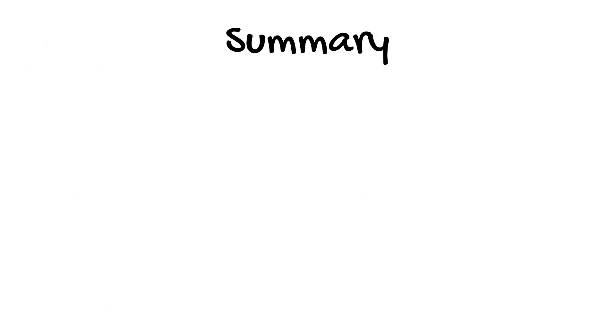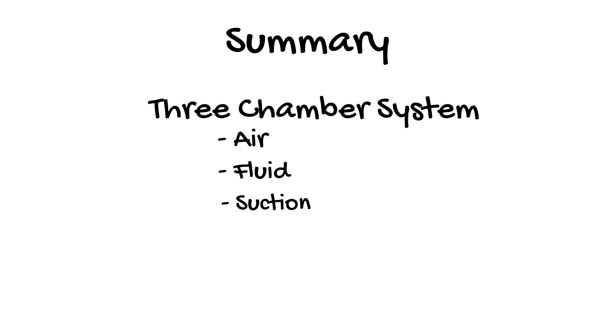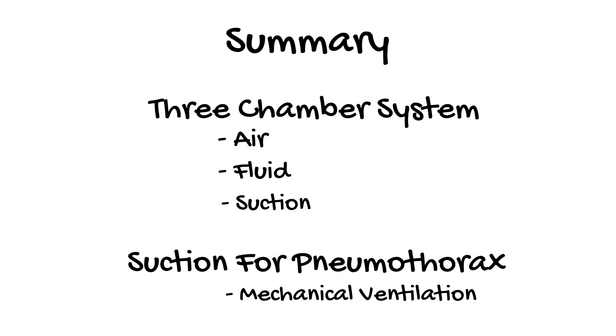In summary, chest drain systems used in ICU function as a three-chamber chest drain system but use a dry suction chamber. This system allows drainage of air and fluid from the pleural space and an adjustable level of suction. Suction is applied to assist with draining a pneumothorax and is routinely used in patients on mechanical ventilation but is rarely required in patients who are spontaneously breathing and are able to cough.